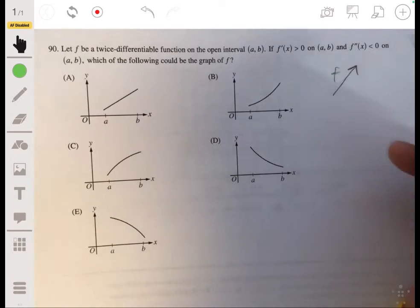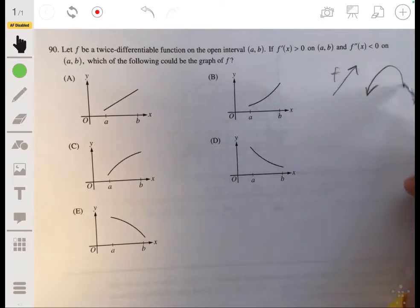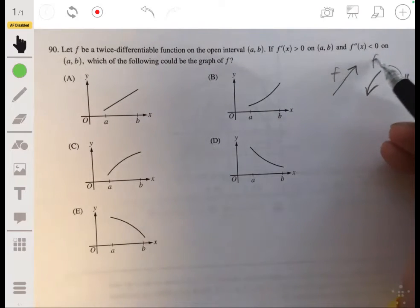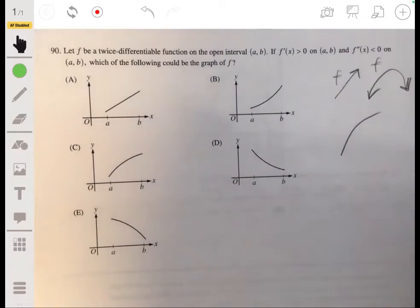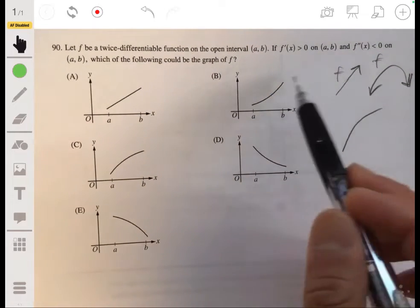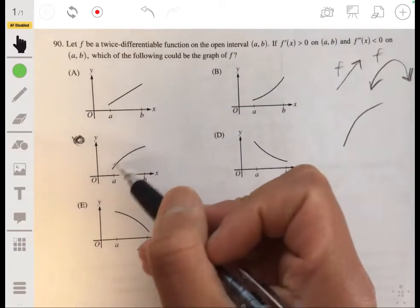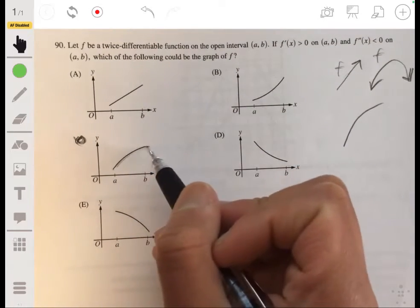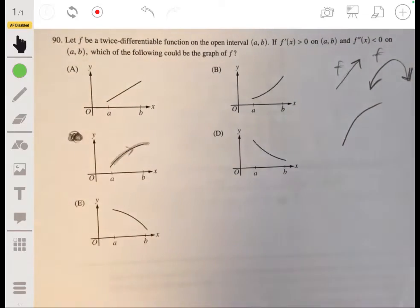So f would look something like this. But since the second derivative is negative, that tells you that it's going to be concave down. So we're looking at something that's increasing but concave down. Maybe something like that. So it would just be c. That would be the only one that would make sense. This is increasing but concave down, as you can see. The answer is c.